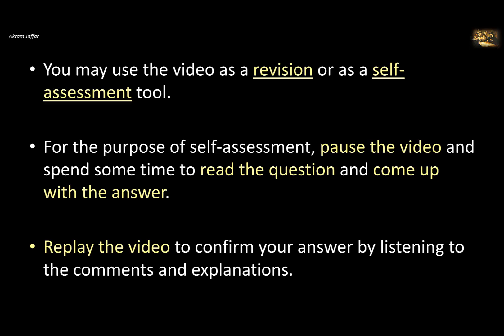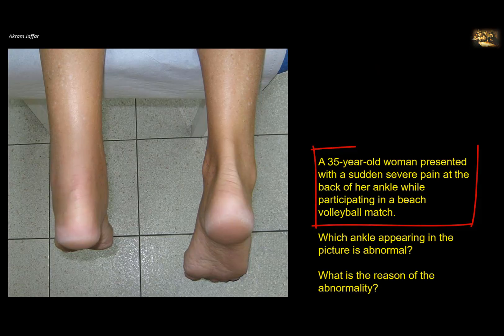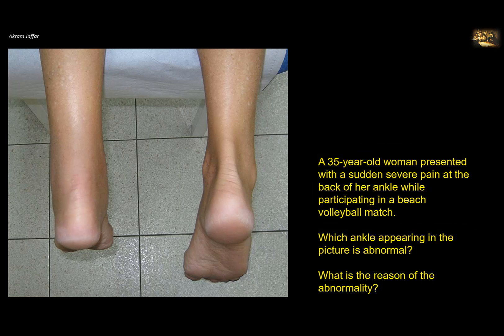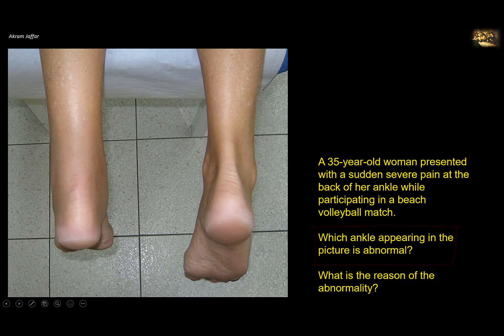Then replay the video to confirm your answer by listening to the comments and explanations. A 35-year-old woman presented with a sudden severe pain at the back of her ankle while participating in a beach volleyball match. Which ankle appearing in the picture is abnormal? The right ankle looks normal — you can see the Achilles tendon — but on the other side it looks abnormal.